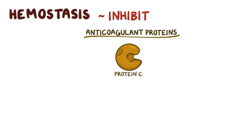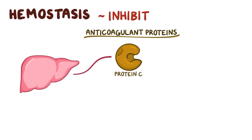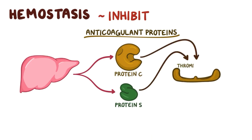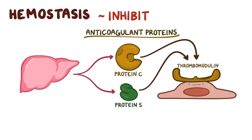This happens with the help of anticoagulant proteins like protein C. Protein C is a vitamin K dependent circulating plasma protein produced in the liver along with a cofactor called protein S. Both protein C and S interact with a protein called thrombomodulin which is on the surface of intact endothelial cells that line our blood vessels.